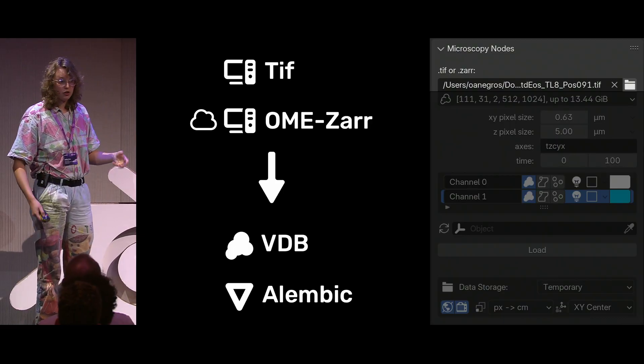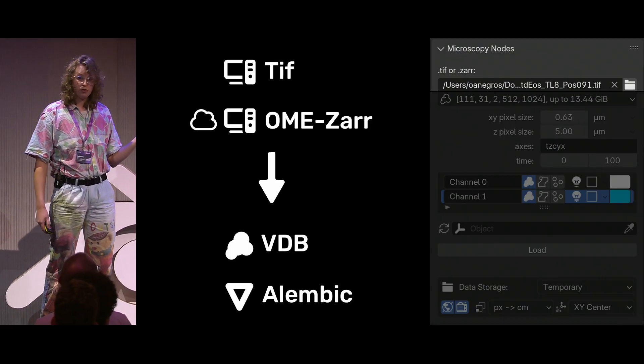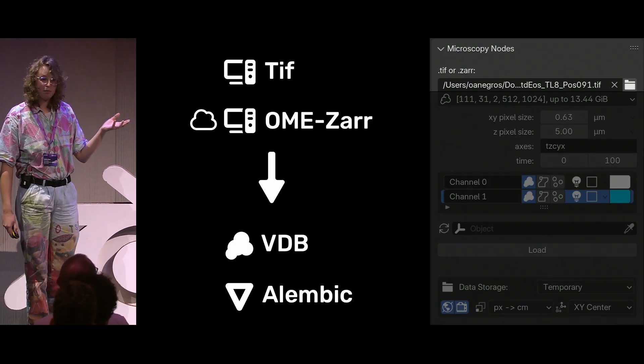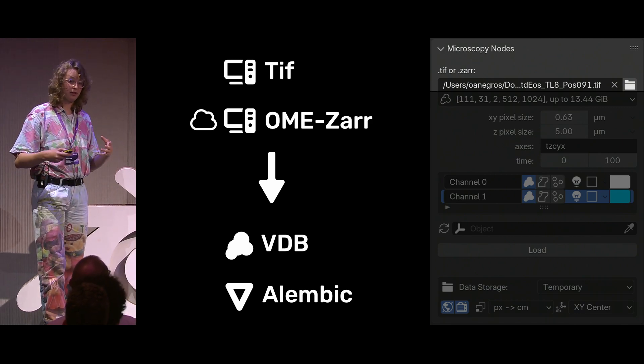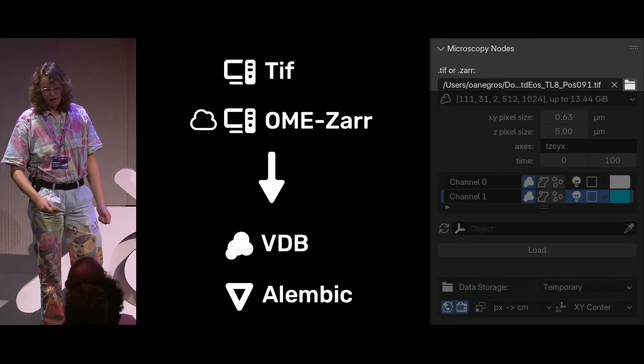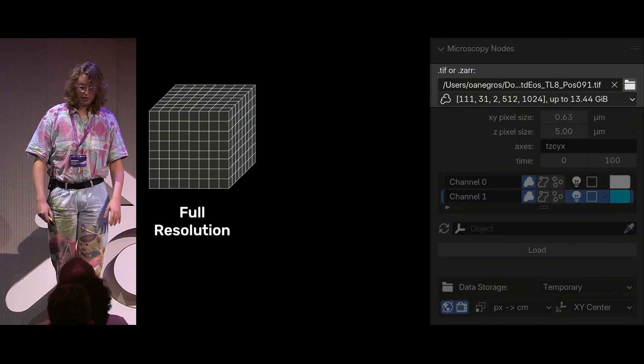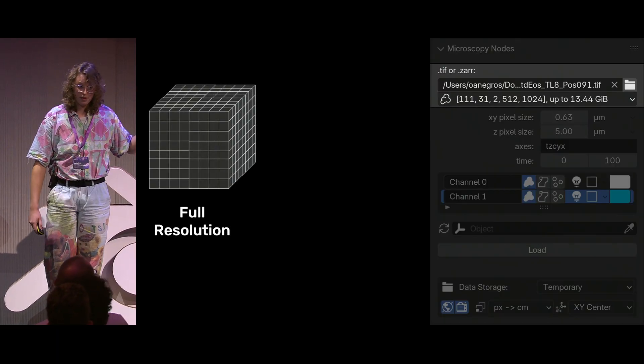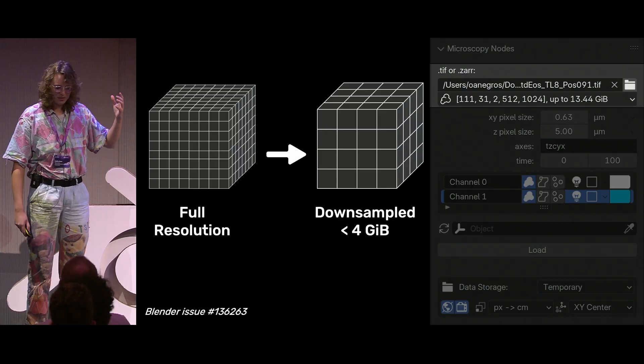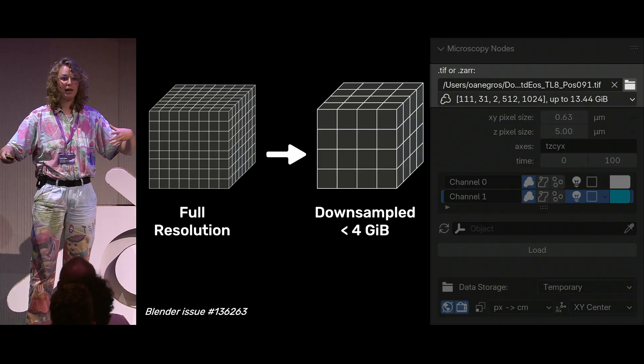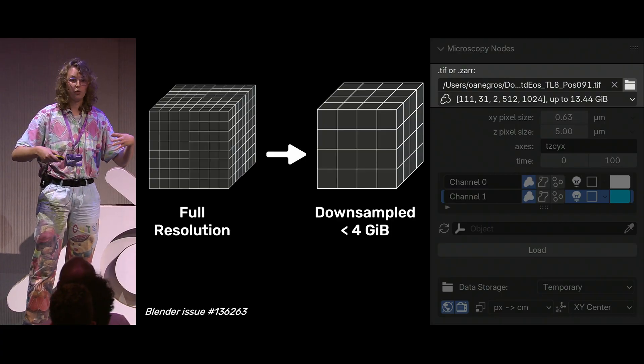And this microscopy nodes will map to VDB files for volumes and Alembic files for meshes that are extracted from volumes. Then there is a scale selector, and this is actually really important. So our full-resolution data is beautiful, but really annoying to work with. So microscopy nodes can automatically down-sample things to under four gigabytes,